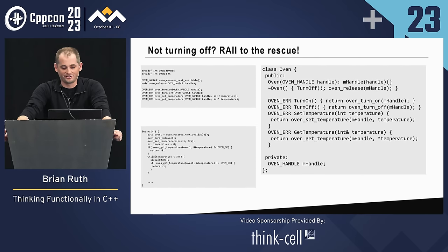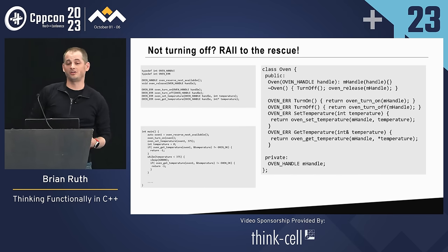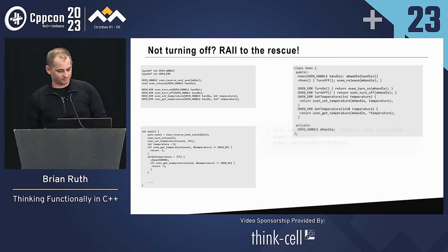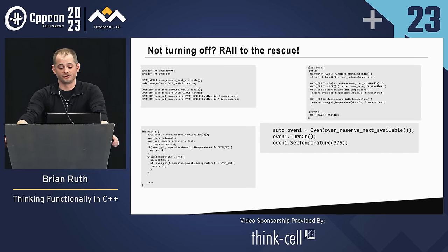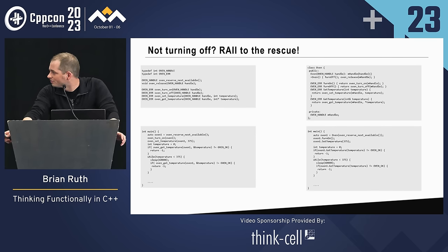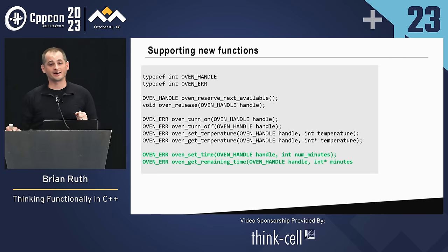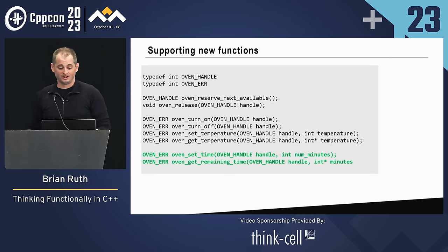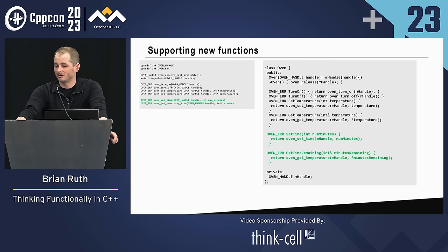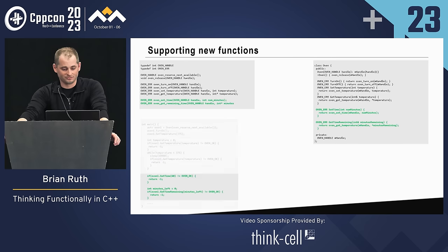Not turning off — RAII to the rescue. Let's wrap this up in a class: an object you pass a handle to, and that handle is stored as a member with all forwarding functions that call the C API. So you do oven.turn_on, oven.set_temperature — it's like any other normal OO operation. That handles the oven won't turn off issue. What about supporting new functions? There's a new API for set_time and get_time_remaining — that's easy, just extend the class with two new forwarding functions. But every single time they add new APIs, you have to go in and extend this class.